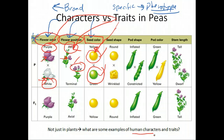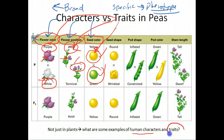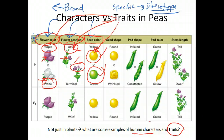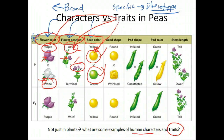Keep in mind this applies to any organism that reproduces sexually — not just plants. For humans, characters include eye color, height, hair color, and skin color. Specific traits for eye color would be green, blue, brown, or even purple eyes. For height, traits include very tall, average, below average, or very short. Those are some examples of differences between characters and traits, and I will ask you about them.